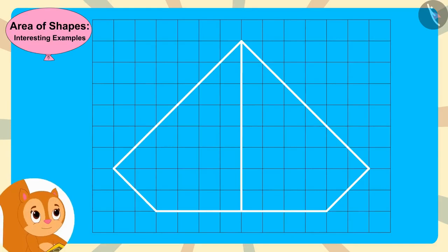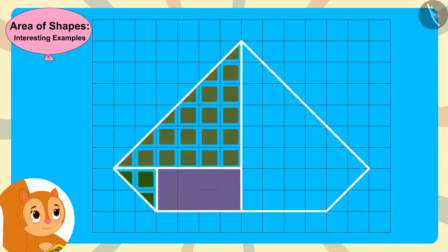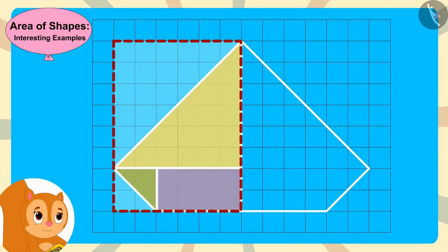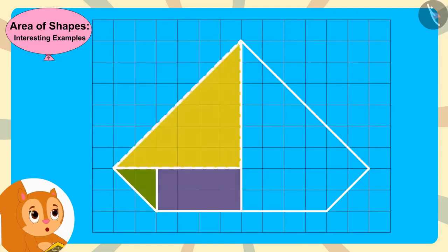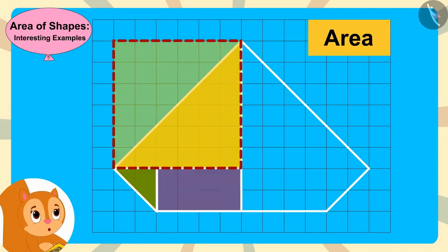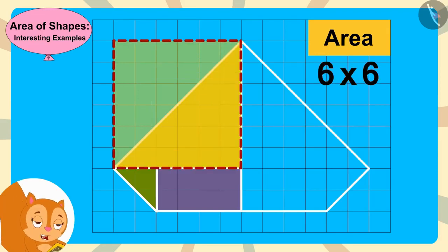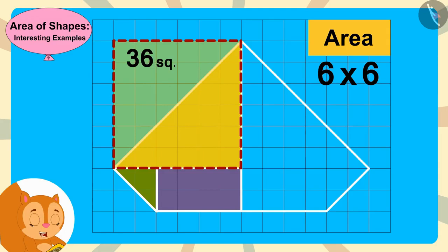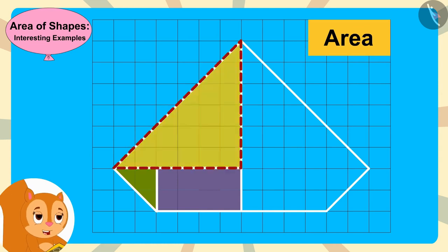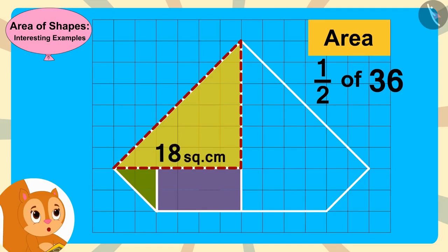Chanda then made rectangles and triangles in this part of the diamond's outline. This large triangle is half of this square. The area of this square is 6 times 6, or 36 square centimeters. So the area of this big triangle is half of 36, or 18 square centimeters.